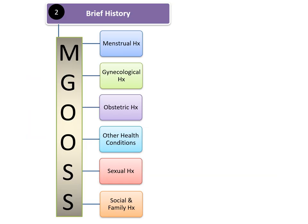Brief history includes menstrual history, gynecological history, obstetrical history, other relevant health conditions, sexual history, and social history which also includes family history.